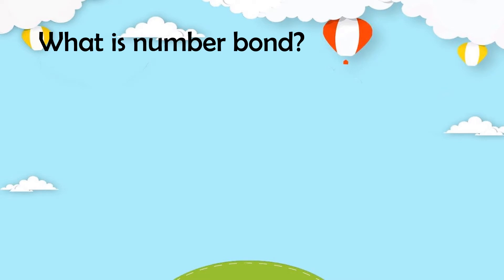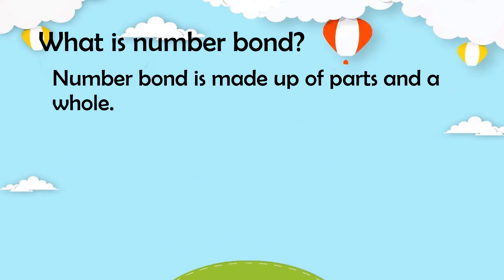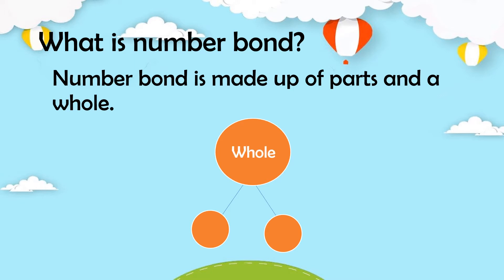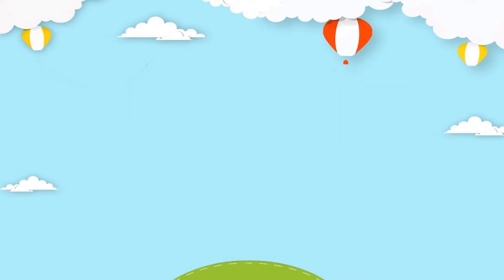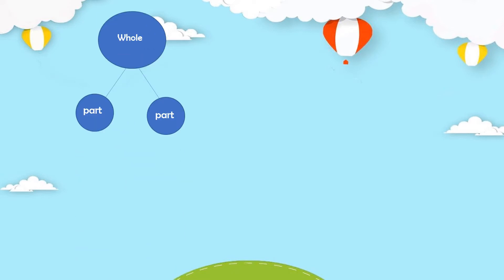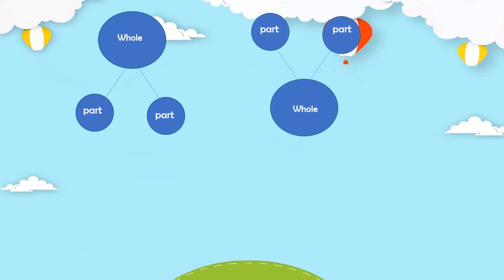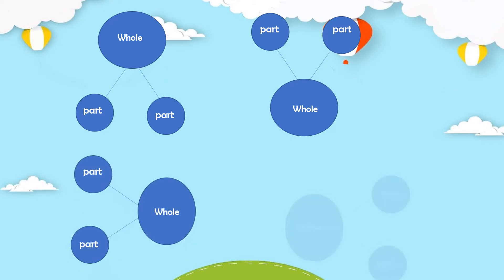First, let's identify what is a number bond. A number bond is made up of parts and a whole. It consists of three circles — usually one big circle and two small circles aligned to it. The big circle is called the whole, and the two small circles are called the parts. Usually a number bond looks like this and like this.